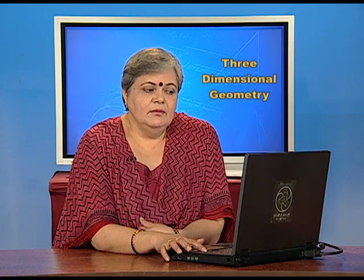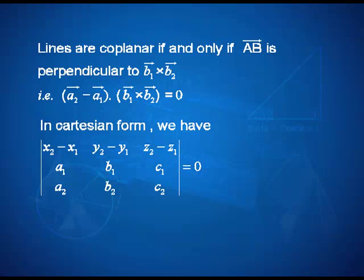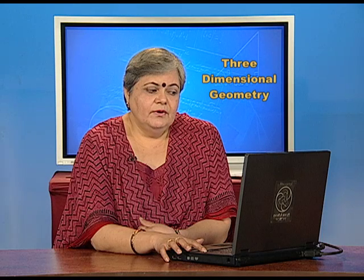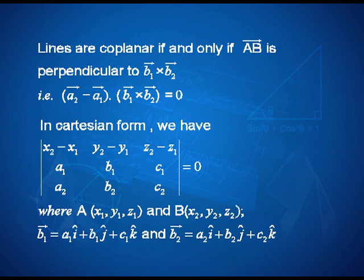In Cartesian form, the same condition translates to the determinant with first row (x2−x1, y2−y1, z2−z1), second row (a1, b1, c1), third row (a2, b2, c2) equal to zero — then the lines are coplanar. Here x1, y1, z1 are the coordinates of point A; x2, y2, z2 are the coordinates of point B; vector b1 has direction ratios a1, b1, c1; and vector b2 has direction ratios a2, b2, c2.